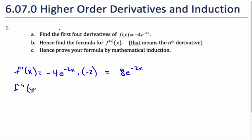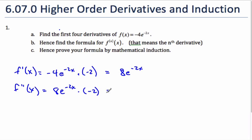Finding the second derivative, I take my first derivative. The derivative of e to the x is just the same, times the inside function which is negative 2. So I get negative 16e to the negative 2x.